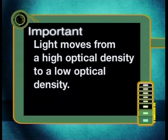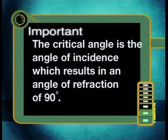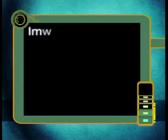Today we have learned that when light hits the boundary between two different media, such as water and air, it is possible for the light to be reflected back into the water so that the diver can see the shark. The conditions for this are that the light must be moving from high optical density to a low optical density, and the angle of incidence must also be greater than the critical angle of the medium with the high optical density. Remember, the critical angle is a special angle of incidence which results in an angle of refraction of 90 degrees, meaning the refracted ray will run parallel to the boundary of the two media.